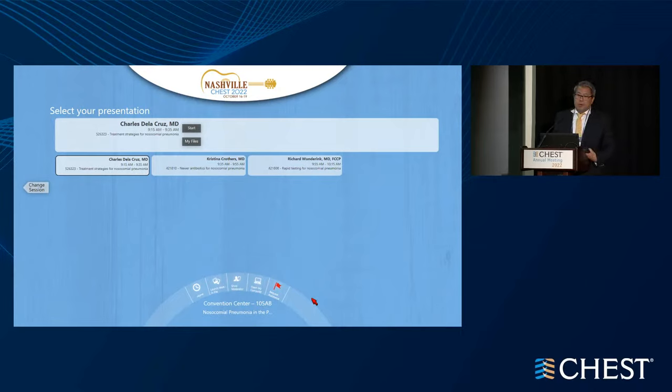One quick question: Polymyxin B versus Polymyxin E — any difference in effectiveness or advantage? I think most of the time there isn't. Polymyxin B is what's been used more often. We don't use it often because we try to avoid MDR organisms, and it's also hard to get into formularies for polymyxin in our hospital.